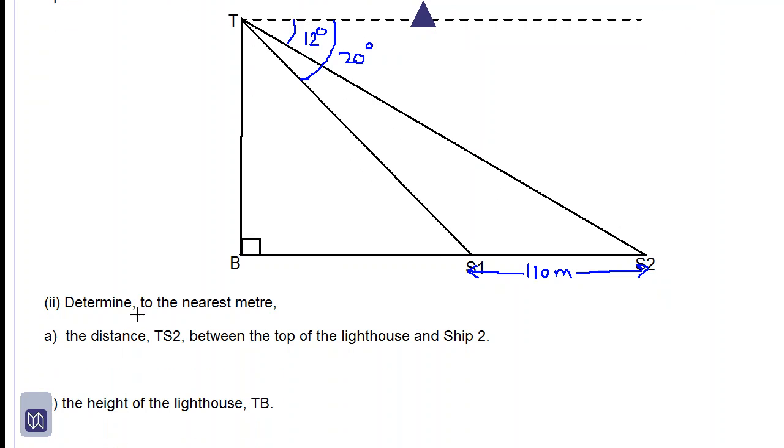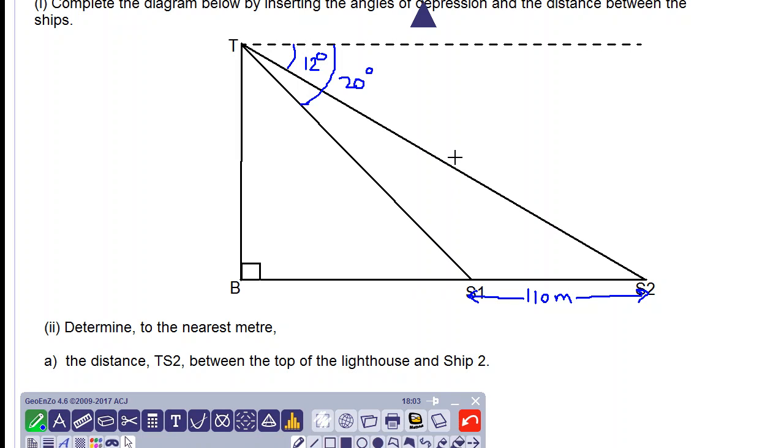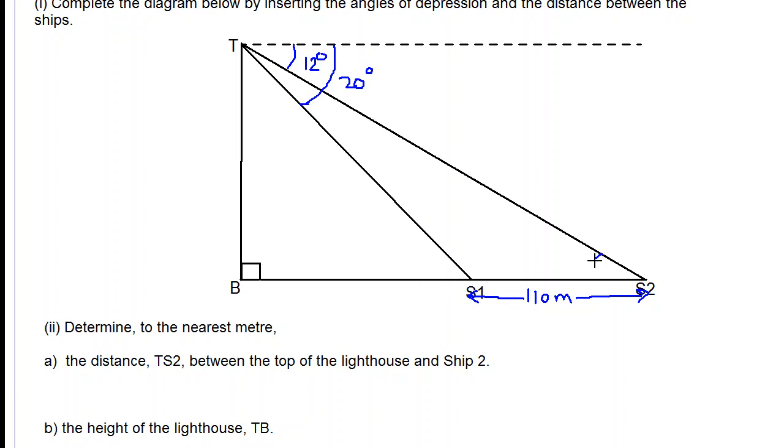Part 2: determine, to the nearest meter, the distance TS2 between the top of the lighthouse and ship 2. So if we use our knowledge of alternate angles, alternate angles are equal and therefore this angle will have to be 12 degrees. We also can find out this angle. If we follow the alternate angles, this angle will be 20 degrees.